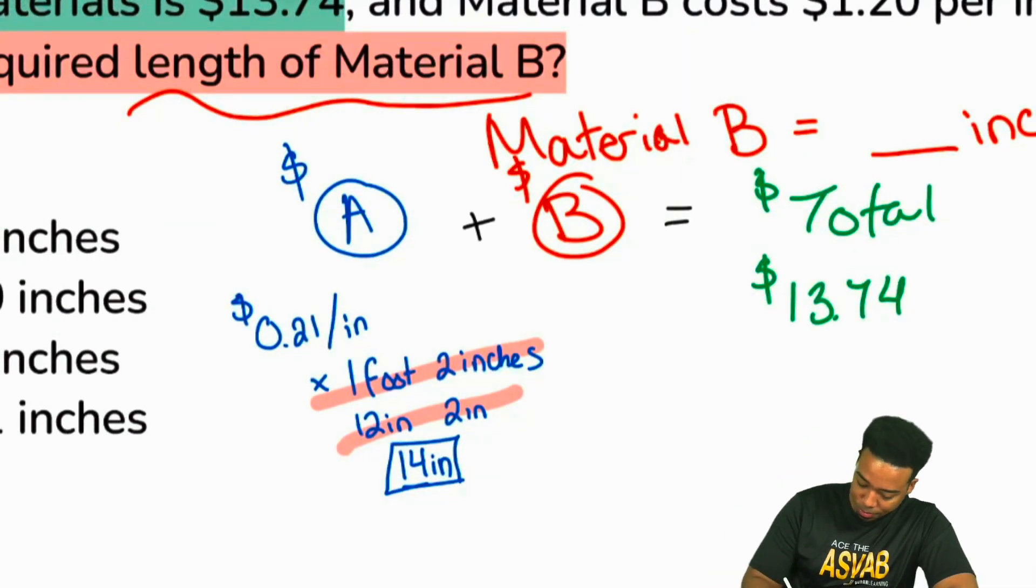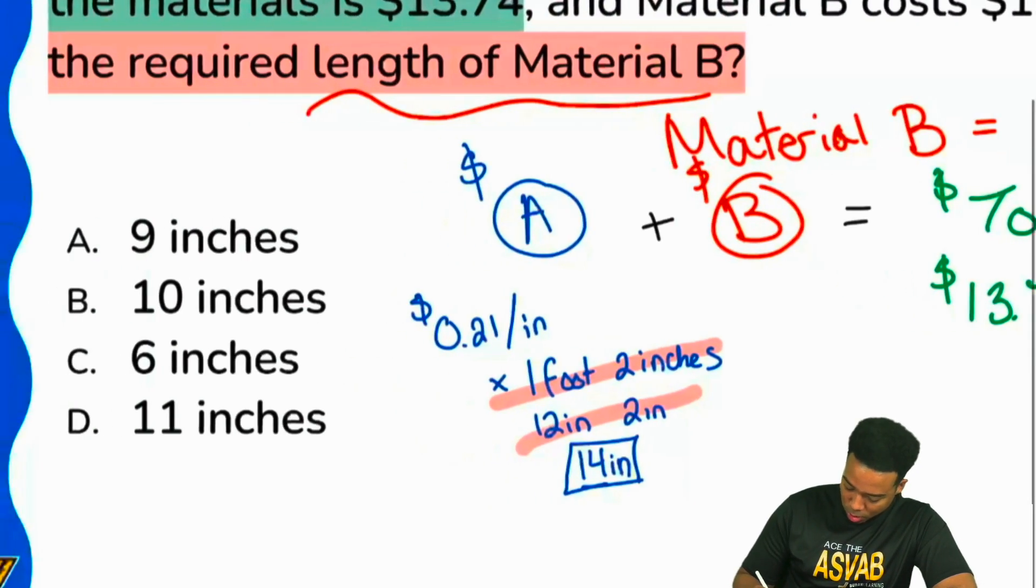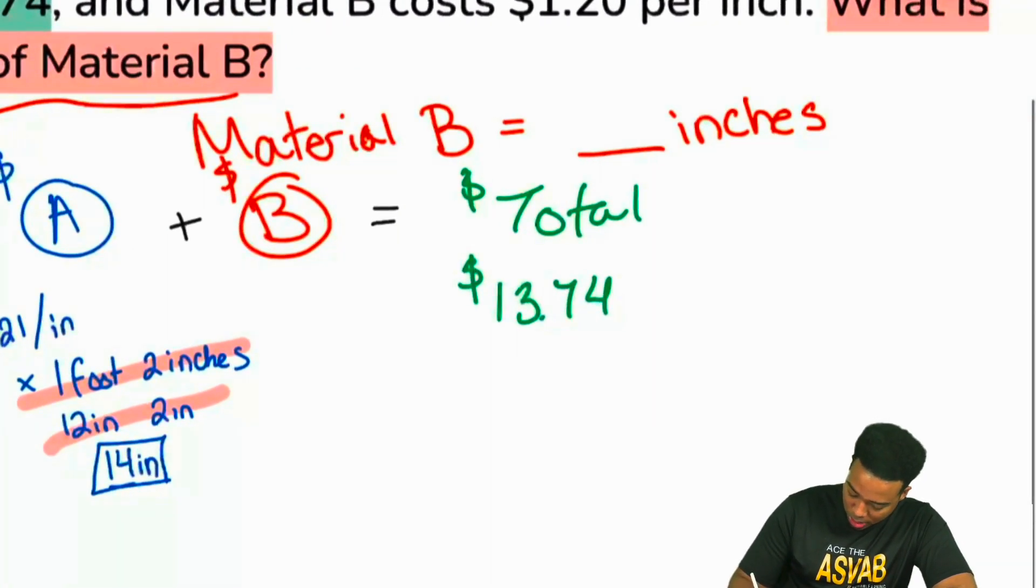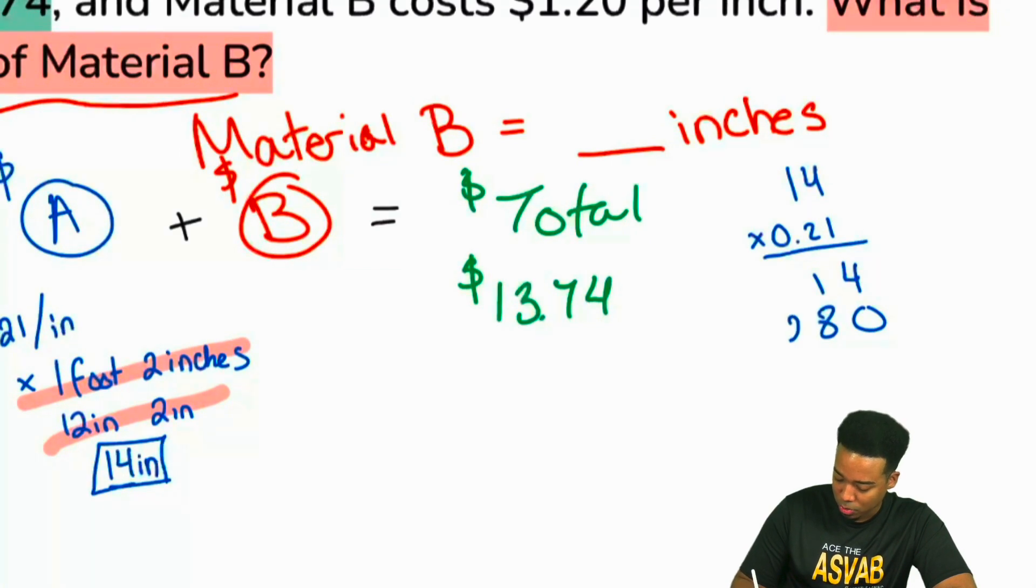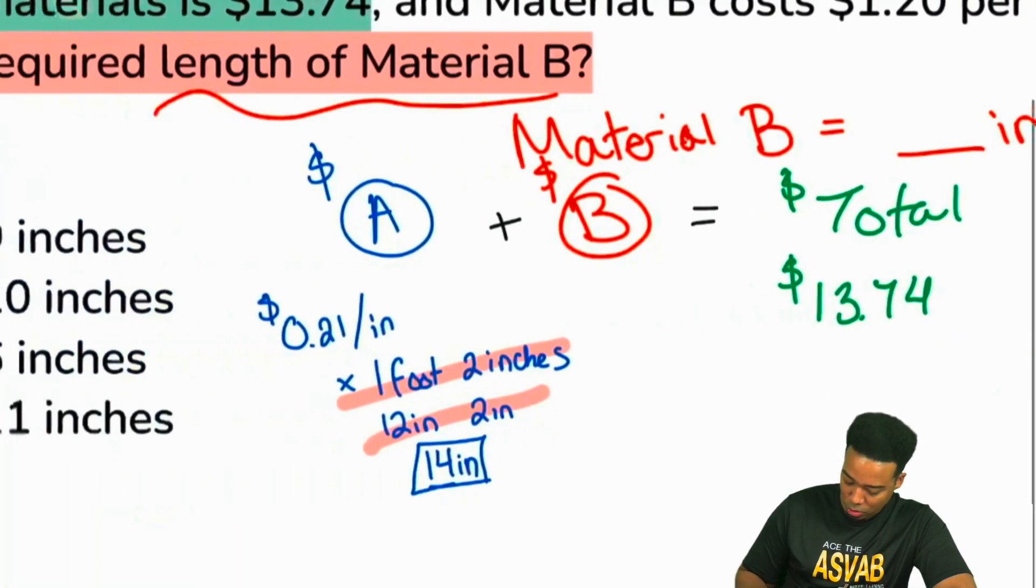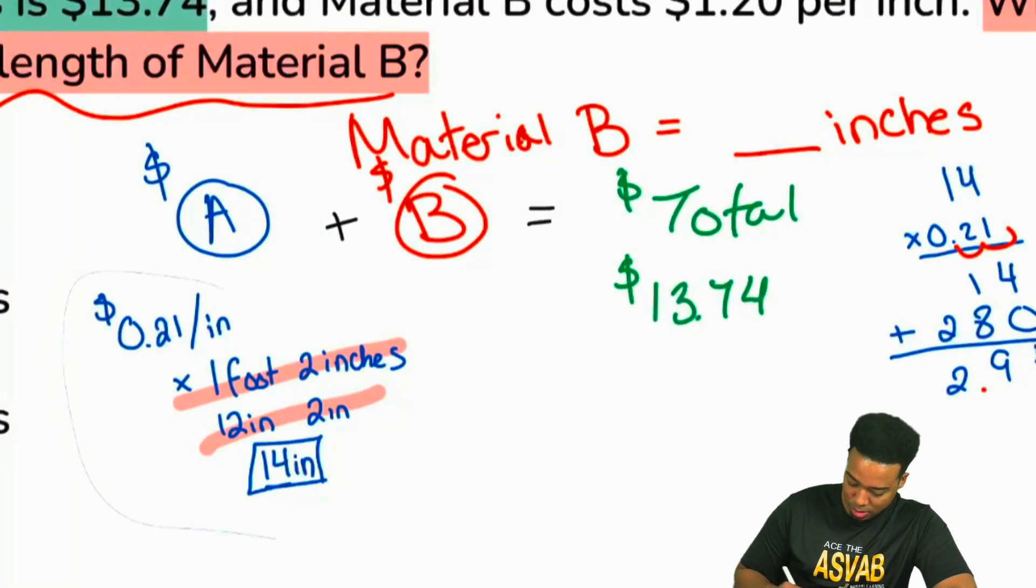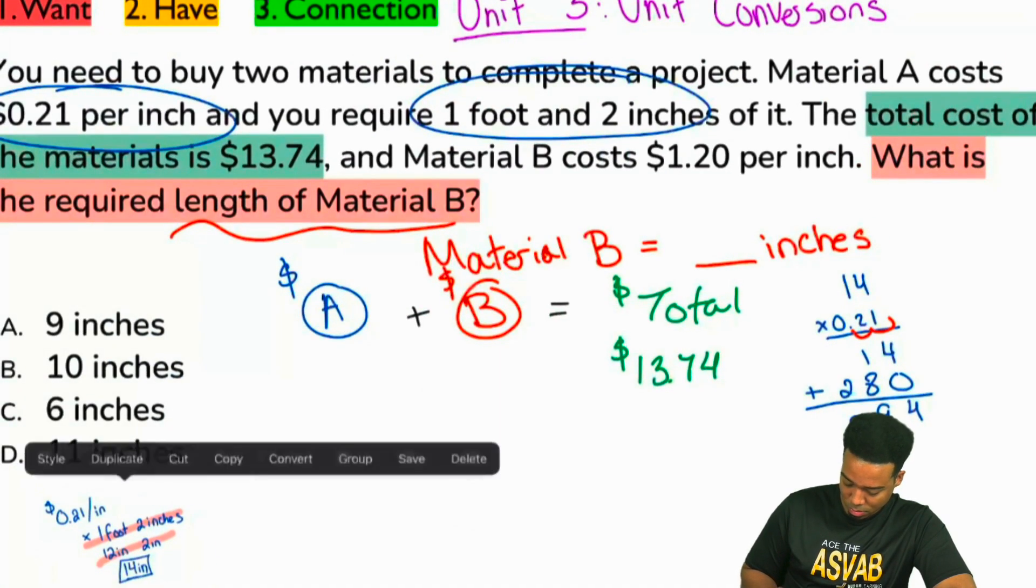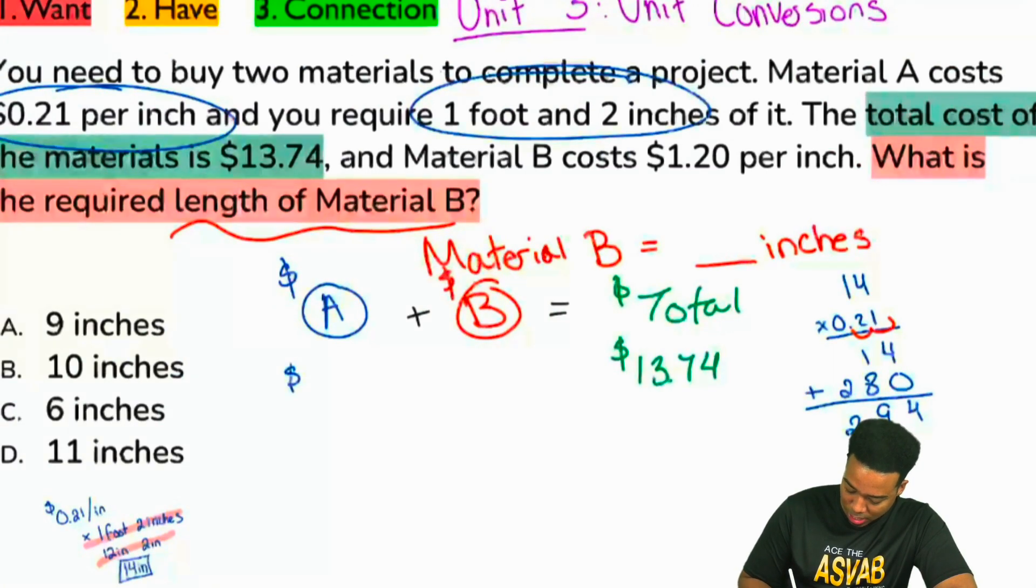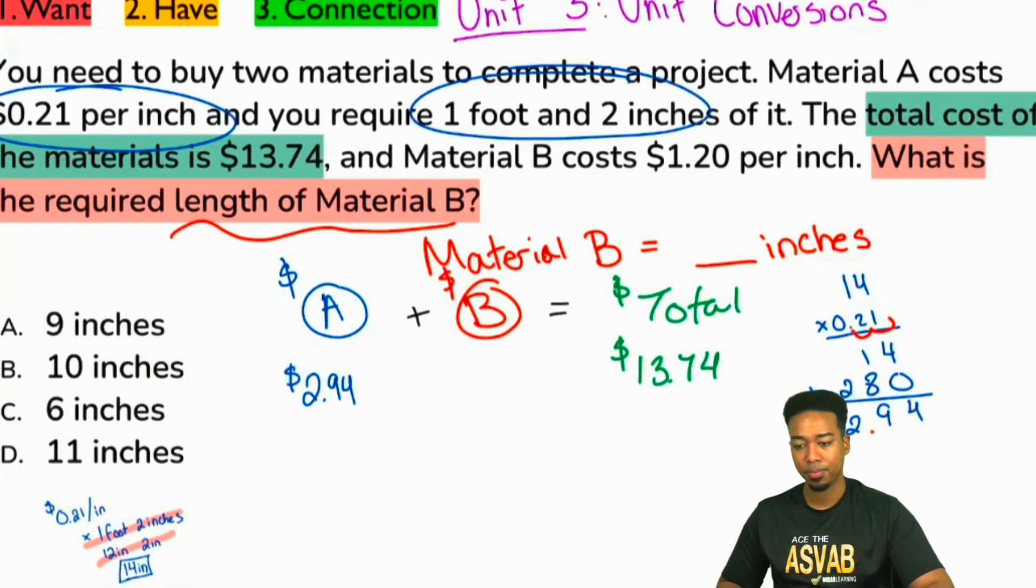Before I continue, are we good? Does that make sense? One foot two inches is going to be 14 inches because a foot is 12 inches and we already had those two inches there. And now let's go ahead and multiply here. So we can say, 14 multiplied by 21 cents per inch. 4 times 1 is 4, 1 times 1 is 1. Bring down that 0 to work on the next line. 4 times 2 will be 8, 1 times 2 will be 2. Add this together and we got 4, 9, 2. We had two decimal places that we used, so we'll bring 2 back. So what we have here is $2.94.